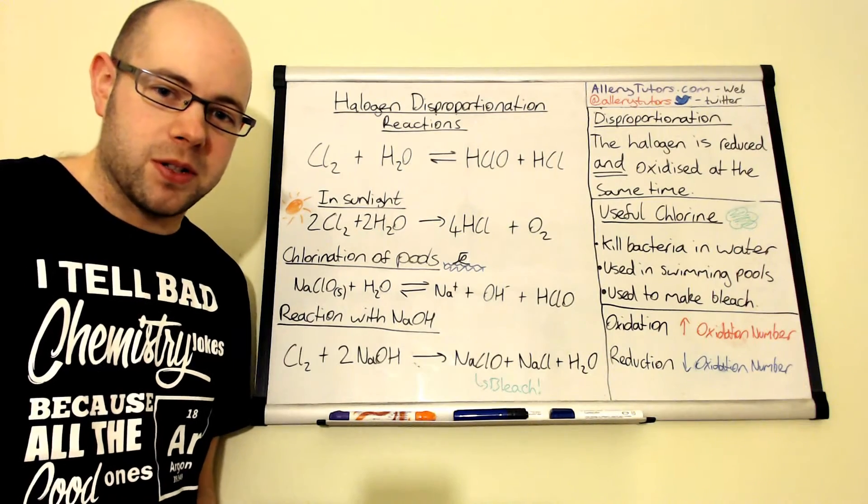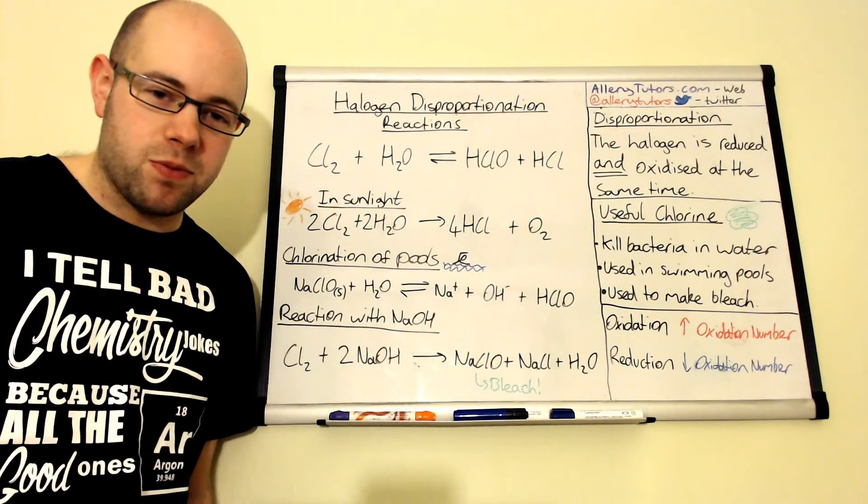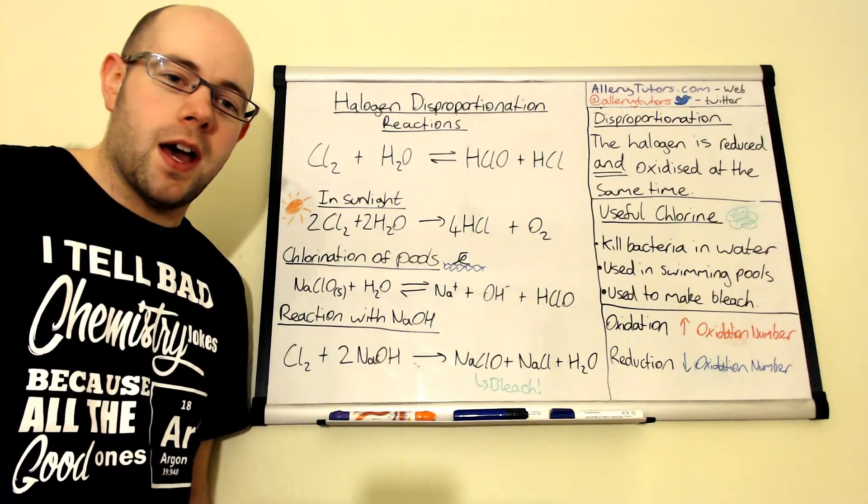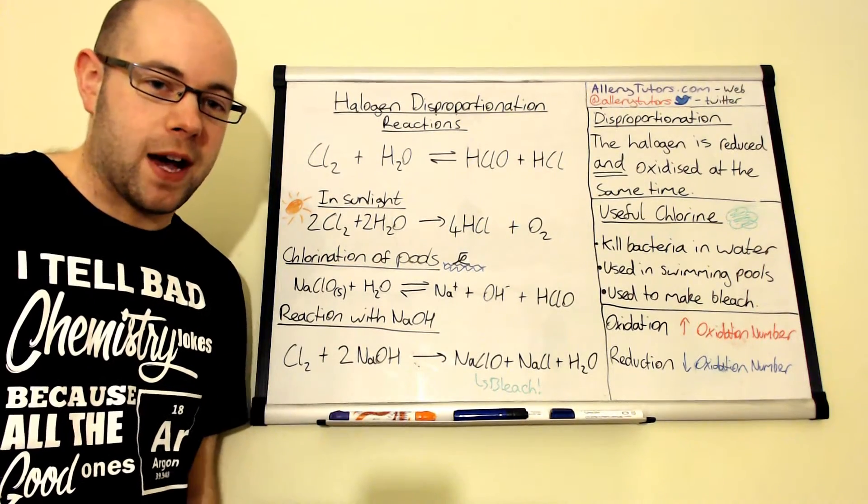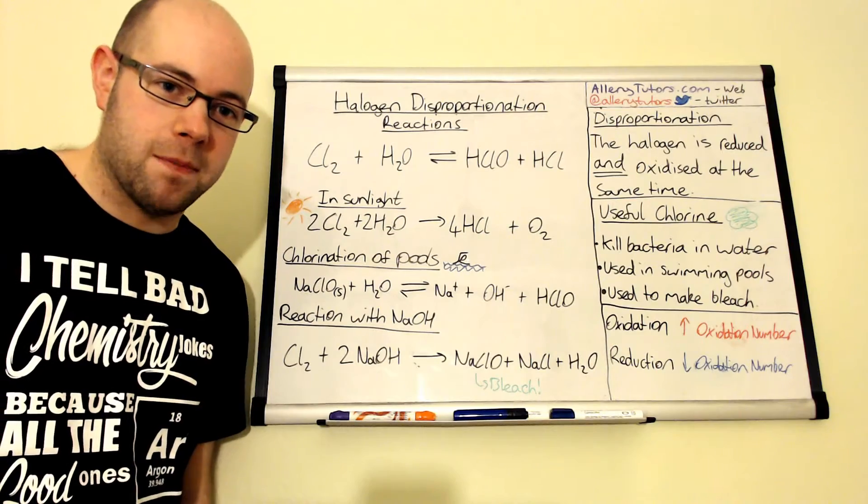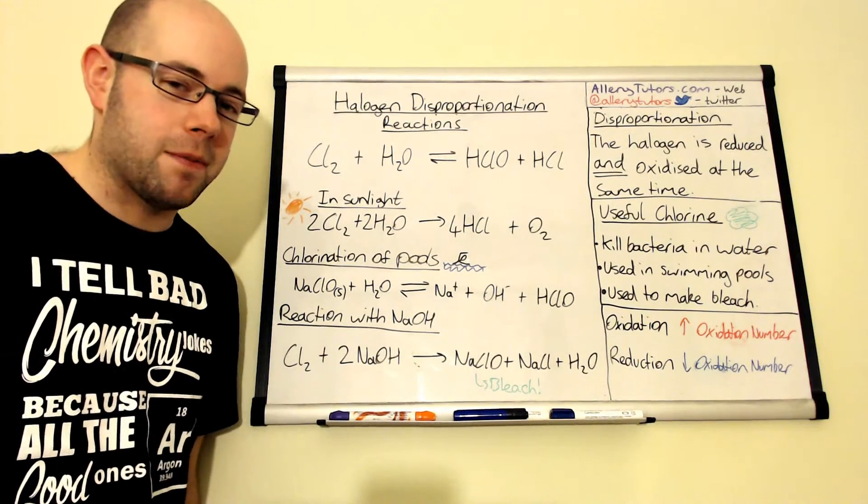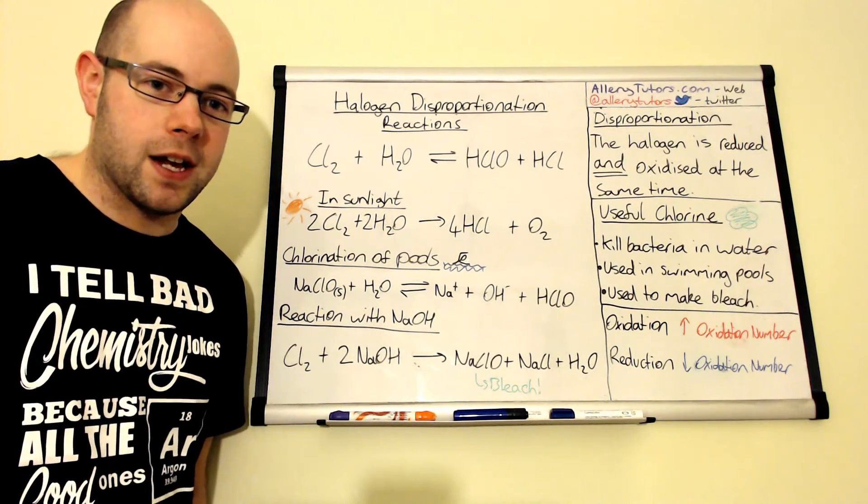We're going to start with looking at what disproportionation is. Disproportionation is effectively the simultaneous reduction and oxidation of a halogen. In this case we're going to focus on chlorine, but it can be applied to other halogens as well.